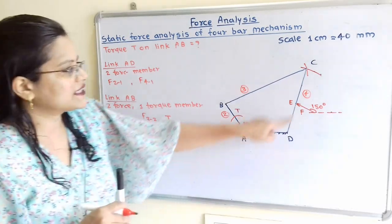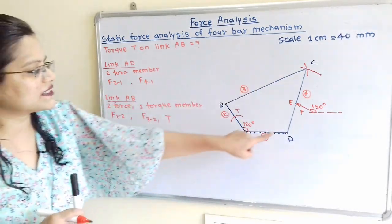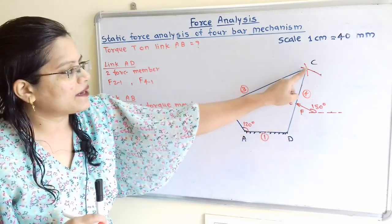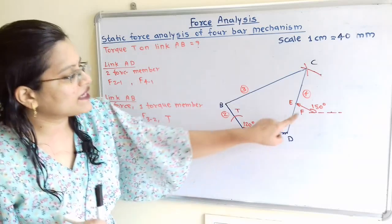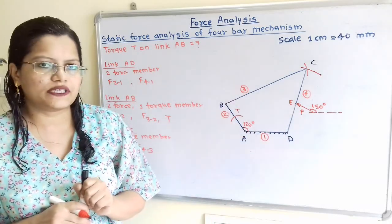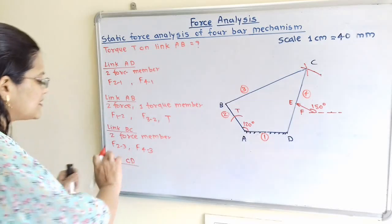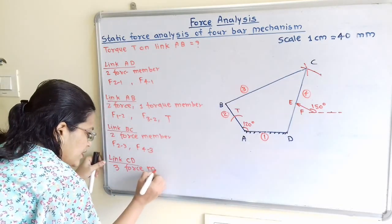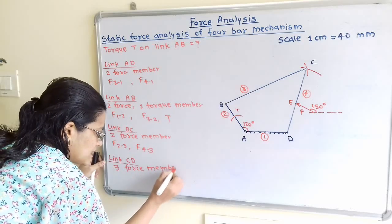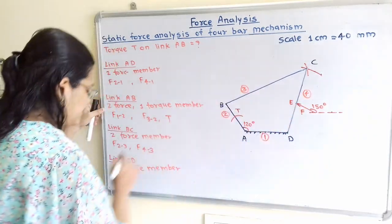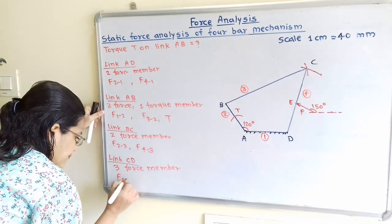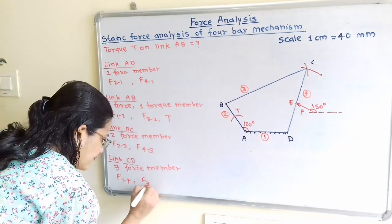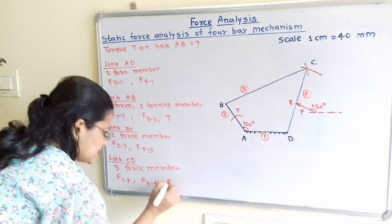For link CD, it is attached to link 1 at point D and link 3 at point C. Since there is also an external force F mentioned in the question, this makes link CD a 3-force member. The three forces acting on it are F(1→4), F(3→4), and the external force F.